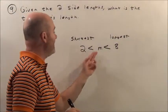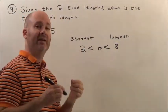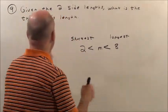That third side has to be between 2 and 8. Now, let's look and think through why, how they got 2 and how they got 8.